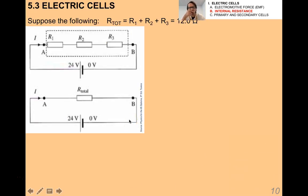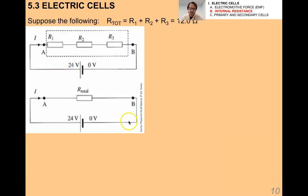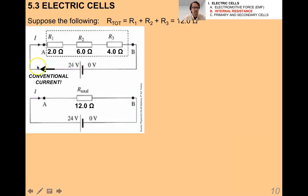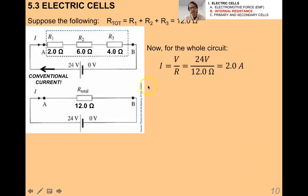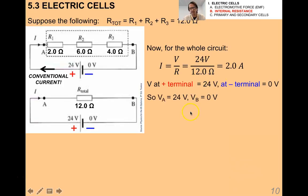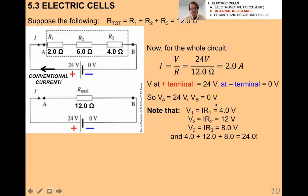Let's rework a circuit we saw before, now considering internal resistance. I reduce the circuit down to an equivalent circuit with a total resistance of 12 ohms, noting conventional current direction. For the whole circuit, the current is 2 amps; the voltage at the positive terminal is 24 V and at the negative is 0 V, all derived using Ohm's law.